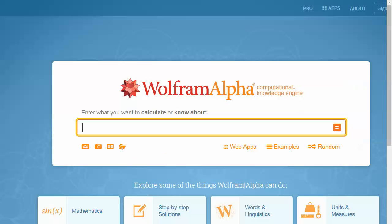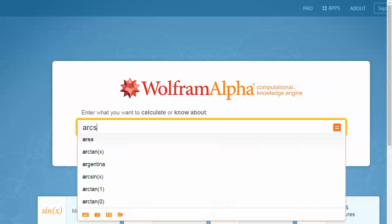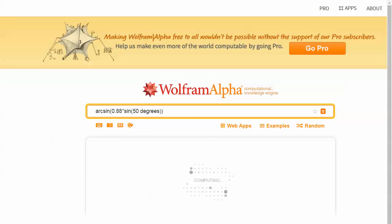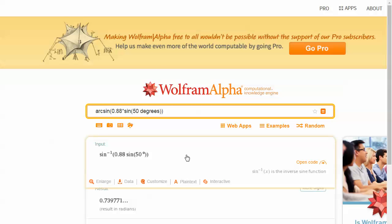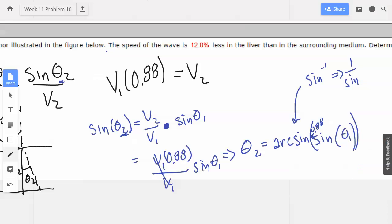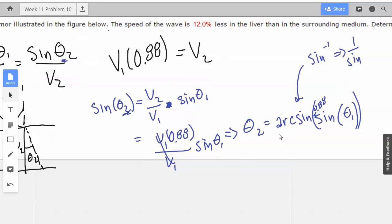Wolfram time. Let's do arcsine of 0.88 times sine of 50 degrees. I could probably just put 50, and I'm pretty sure Wolfram would figure it out. Wolfram's good like that. But better not take chances. 42.4.